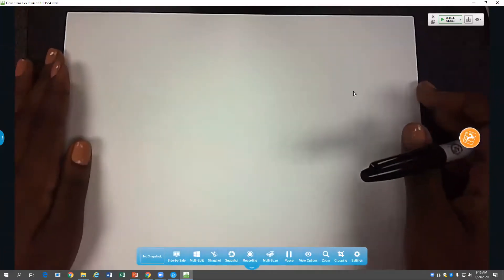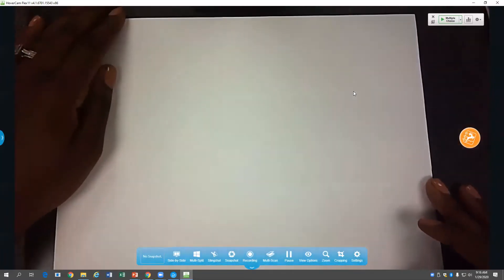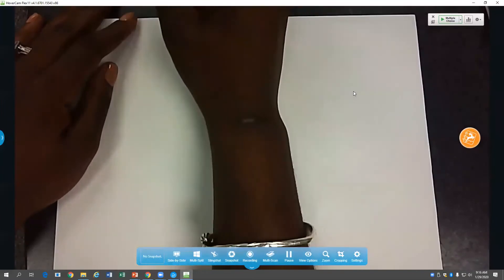So we're going to start out by looking more closely at the phospholipid bilayer which forms the cell membrane, and we usually call this the fluid mosaic model.